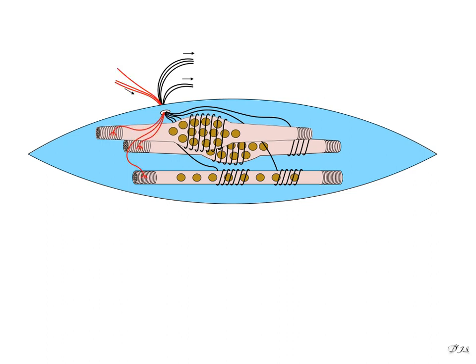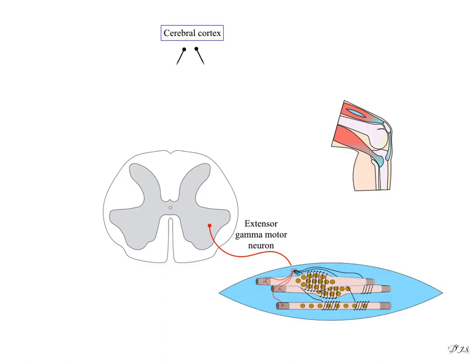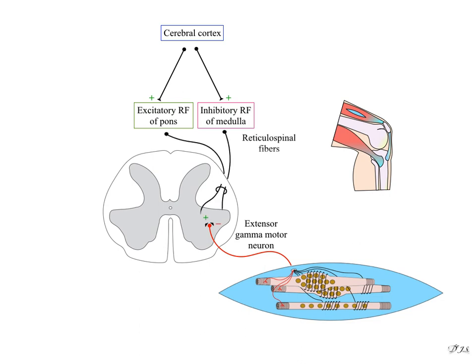There are dynamic gamma and static gamma motor neurons. The activity of the gamma motor neuron is influenced by the cerebral cortex via the excitatory reticular formation of the pons and the inhibitory reticular formation of the medulla. Among these, the excitatory reticular formation predominates over the inhibitory reticular formation, and signals are sent to the gamma motor neuron via reticulospinal fibers.